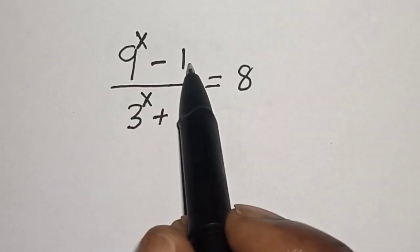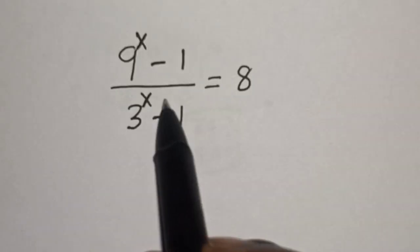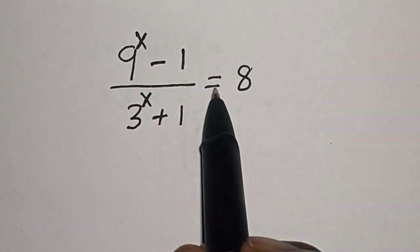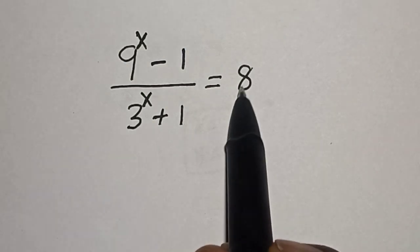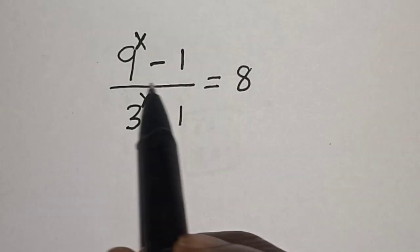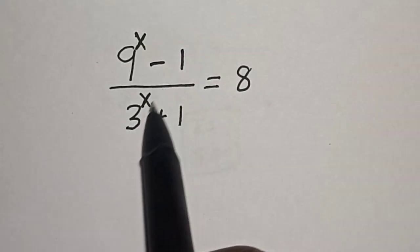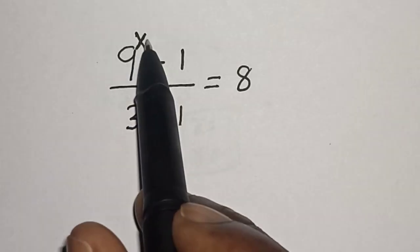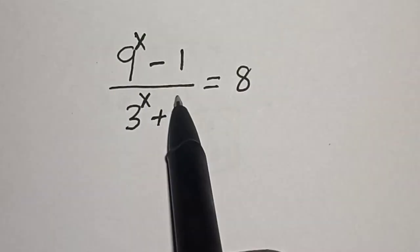9 raised to power x minus 1 divided by 3 raised to power x plus 1 is equal to 8. Hi everyone, welcome to my class. In this class, we want to find the value of x from this equation.